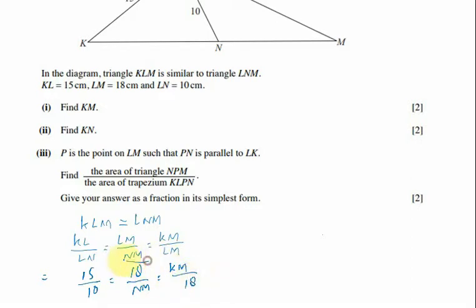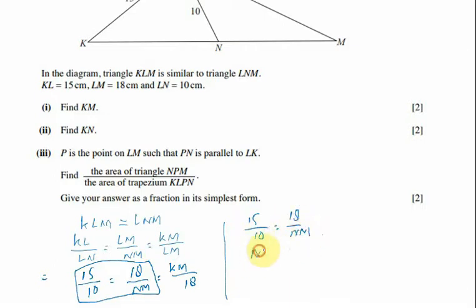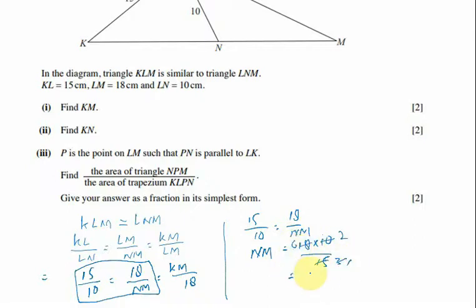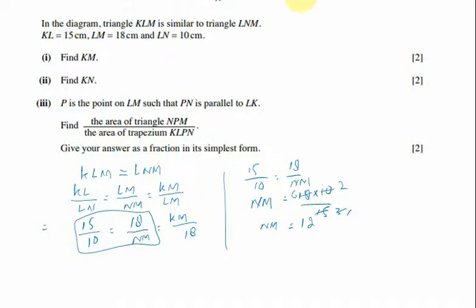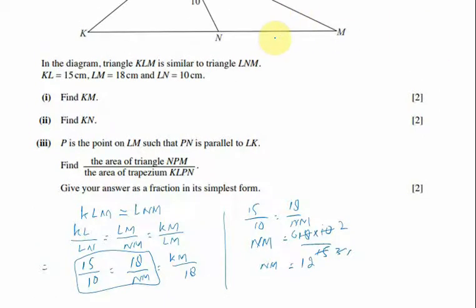Taking the first fraction, 15 upon 10 equals 18 upon NM. So NM equals 18 multiplied by 10, divided by 15. Simplifying: 5 goes into 10 twice and into 15 three times, so 6 divided by 3 gives us NM equal to 12.